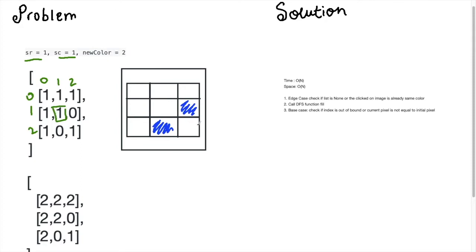I've drawn out the initial matrix in a grid. I've colored the zeros as blue — so 0 represents blue — and 1 represents white. We're going to color this matrix manually with green, which represents the new color 2. This is my starting point, so I'll color it green. I can look at the cell above me and see — yes, that cell is also white, so I'll color it green too. Looking up again, there are no more cells above.